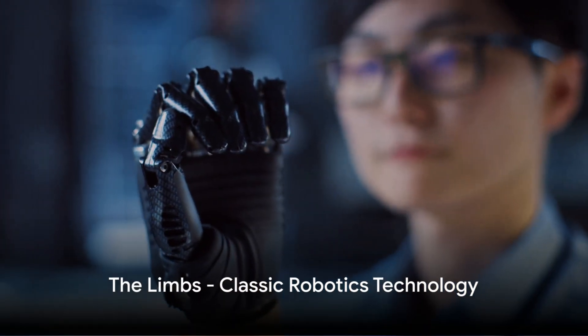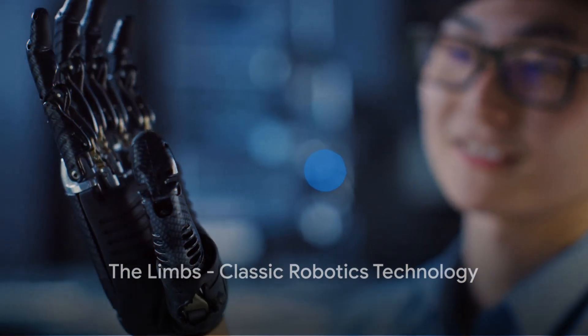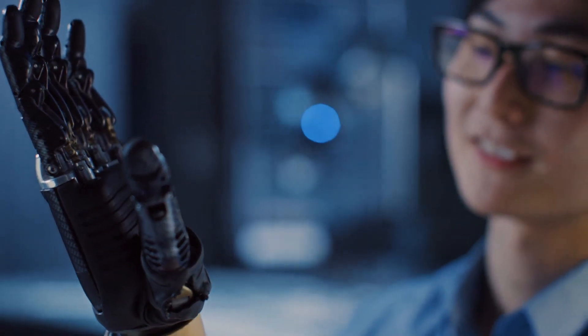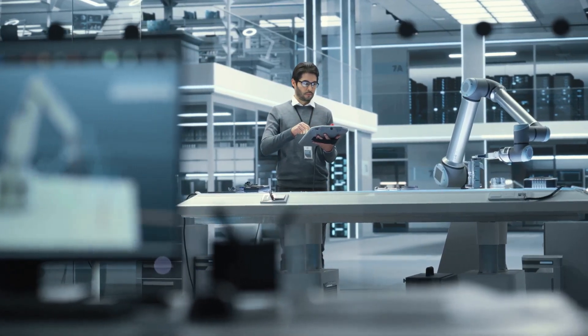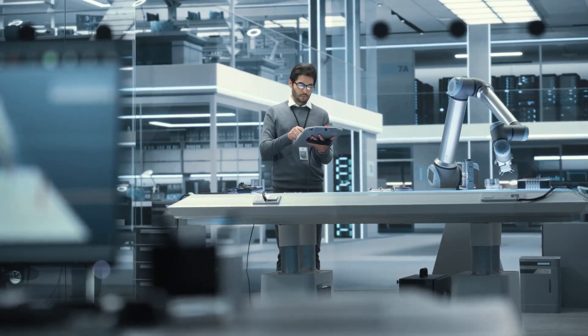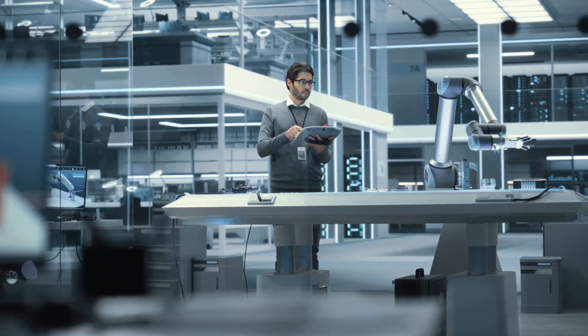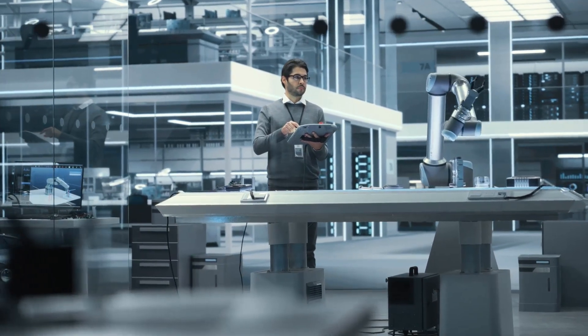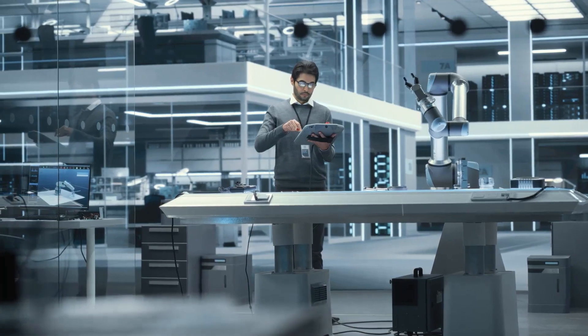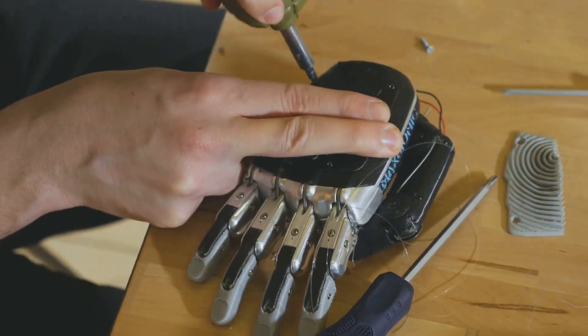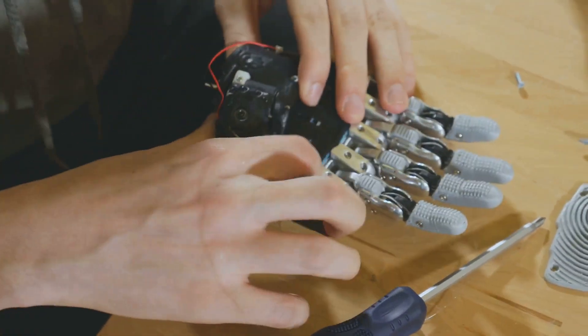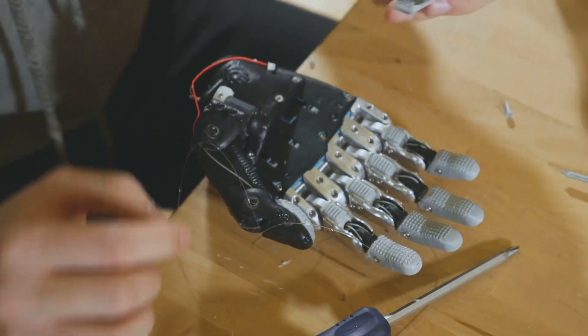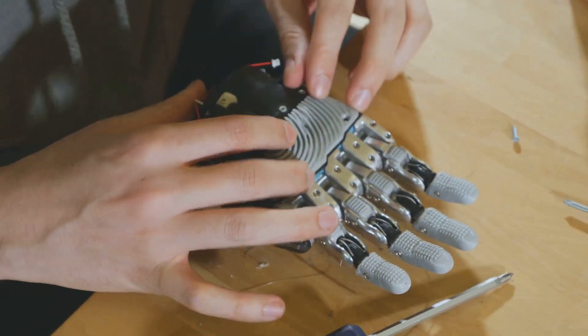The limbs of these robots are designed using classic robotics technology, including dexterous hands and lightweight materials. Now let's delve into the world of classic robotics technology. It's in the limbs of these humanoid robots where the past meets the future. The limbs, much like our own, are integral in enabling the robot to interact with its environment. But creating robotic limbs that mimic the dexterity and precision of human hands is no small feat. It's a challenge that has puzzled and inspired robotics engineers for decades.